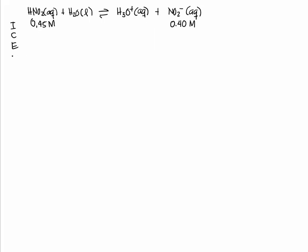I will let X be equal to the amount of HNO2 that reacts with H2O to reach equilibrium. So this is X. Initially we don't have any H3O plus. H2O is a liquid so we can disregard it.